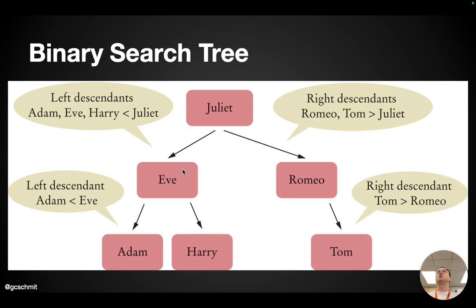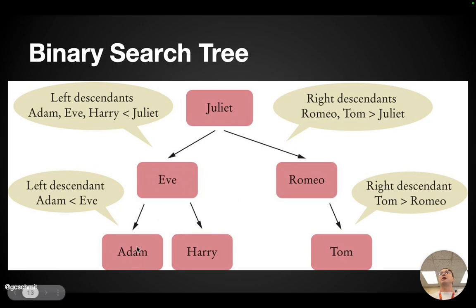This rule — that the left descendants come before and the right descendants come after a node — is true of all nodes. So if we look at Eve, Adam comes before Eve and is a left descendant. Harry comes after Eve and is a right descendant.